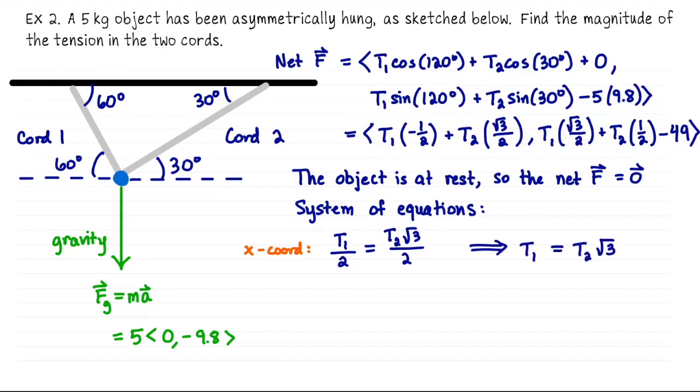Okay, multiply both sides by 2 and we get a nice equation relating T1 and T2. So T1 is T2 times square root of 3. Okay, let's look at the y coordinate. We have a little bit more there because that's where gravity showed up. So the y coordinate needs to satisfy that T1 times the square root of 3 over 2 plus T2 over 2 must be equal to 49.